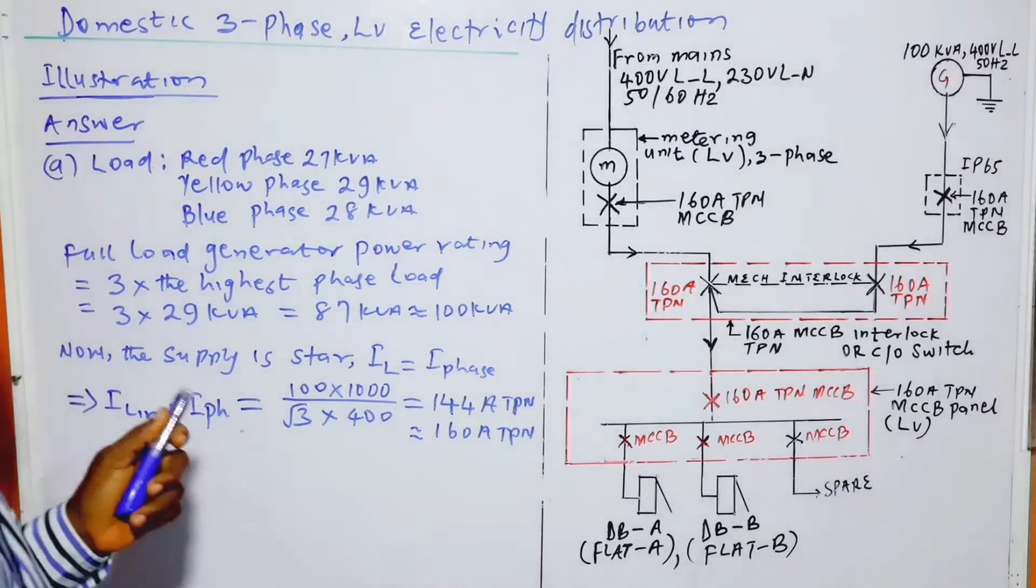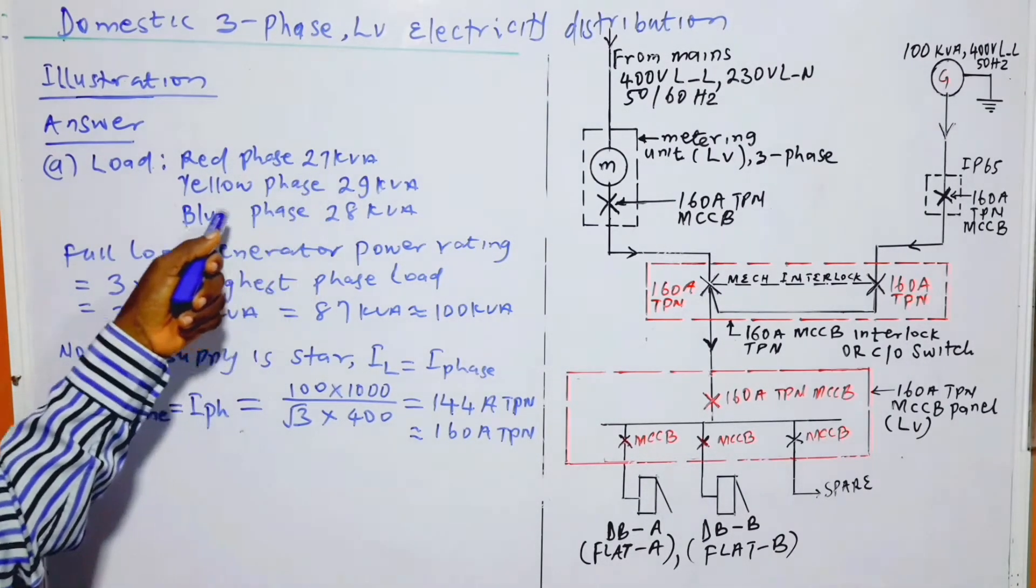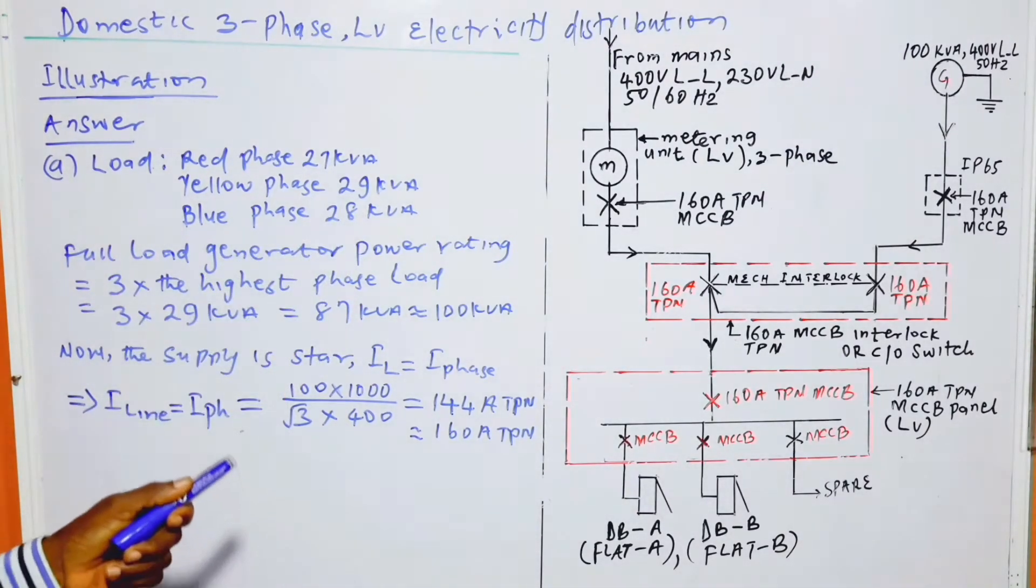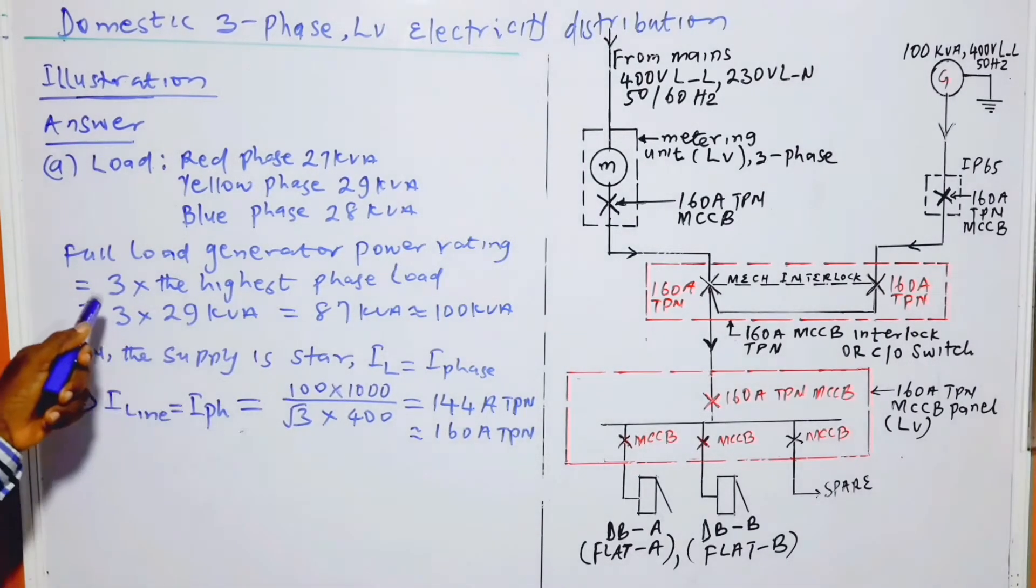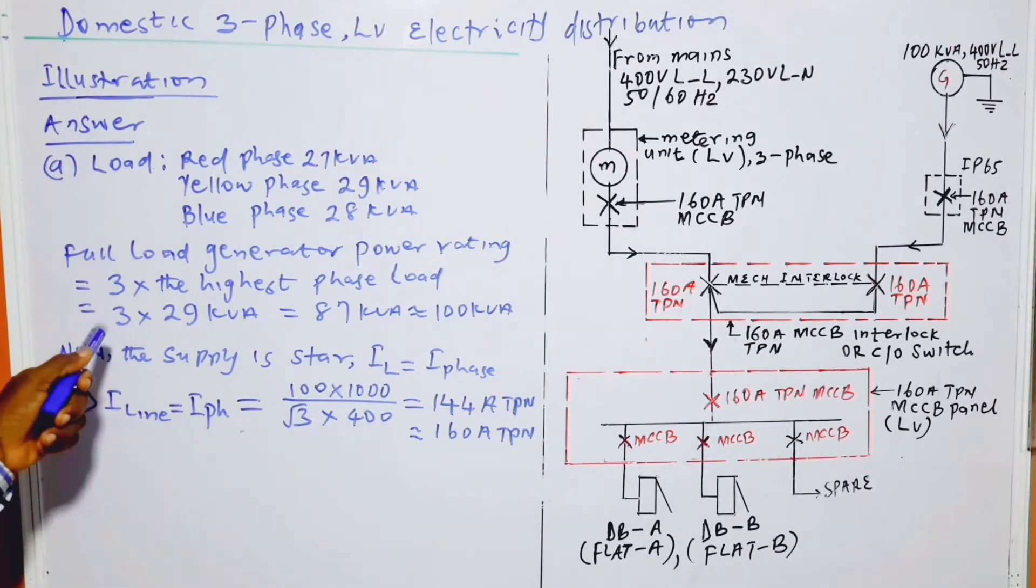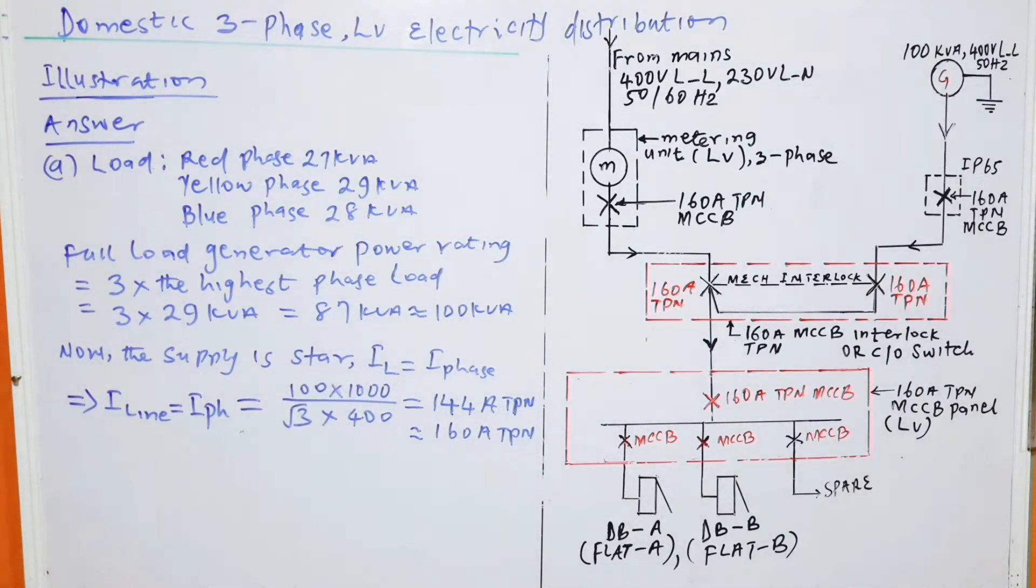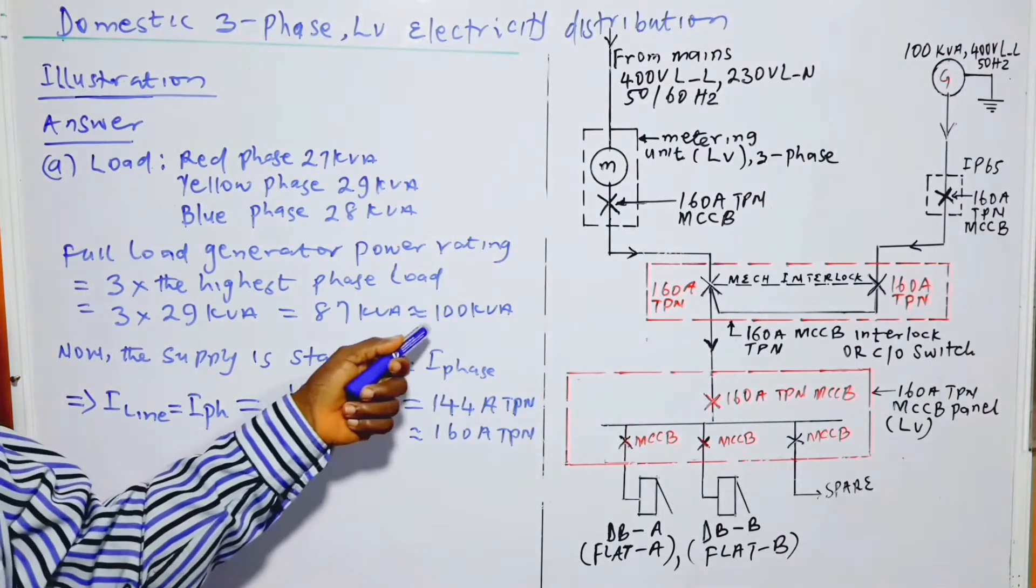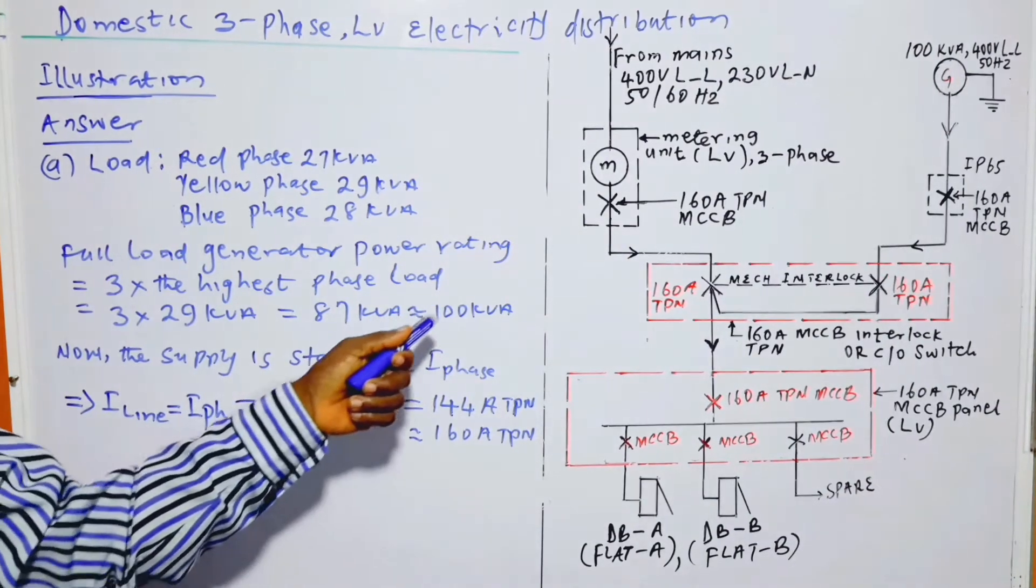Answer to the questions. You have red phase load 27 kVA, yellow phase 29 kVA, blue phase 28 kVA. Full load generator power rating is equal to 3 times the highest phase load, which is 3 times 29 kVA, which equals 87 kVA. The next available generator power rating in the market is 100 kVA, so we choose 100 kVA.